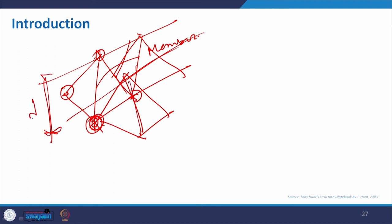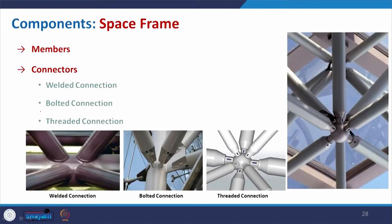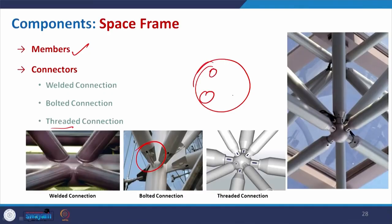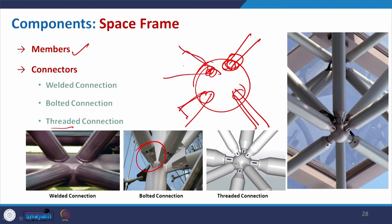Coming to the components of space frame: we have members and connectors. The connection may be made by welding, bolt, or threaded connection. In welded connection, all connections are welded with the members. In bolted connection, the members are adjusted to the connector with bolts. In threaded connection, the members are fitted into a hemispherical or spherical connector where holes at certain angles allow you to fix each member with a thread.